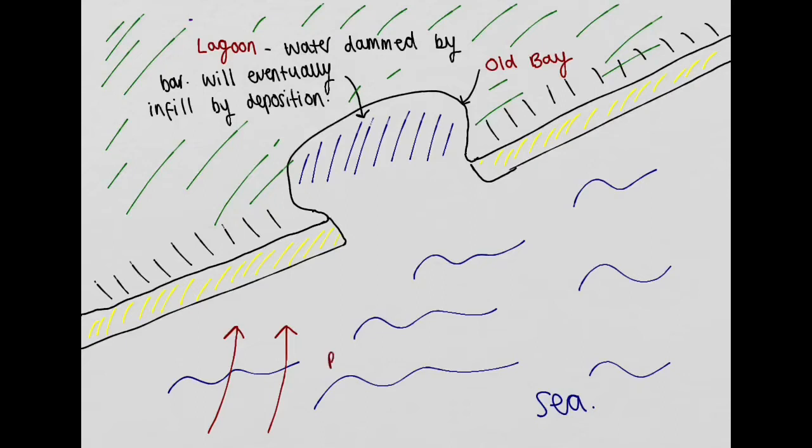Now the prevailing wind is the most common wind direction that you find at a specific location. So our prevailing wind in this example is following these arrows, it's coming from this direction here. Now what that means is that the waves at this coastline are going to be running up onto the beach at an angle equivalent to the direction of the prevailing wind.